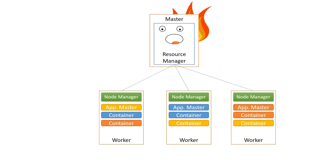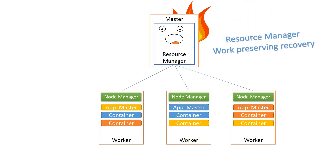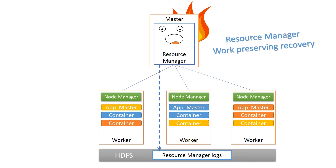What if the resource manager has a problem? Well, on Hadoop versions before version 2, this would have been a big problem because the resource manager was the single point of failure back then. And by the way, in the default configuration it still is. In the more recent versions of Hadoop 2, there is also resource manager work-preserving recovery, which makes sure that the state of the resource manager is saved to a resource manager log, which you can save on HDFS. That way, the resource manager can survive through a crash and you can restart it again. But for high availability, we need more than that.